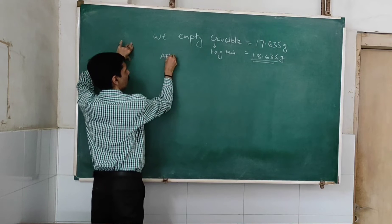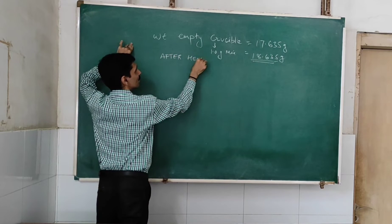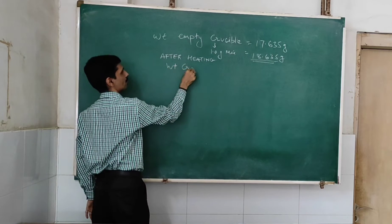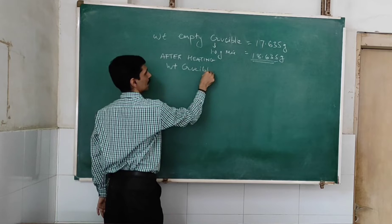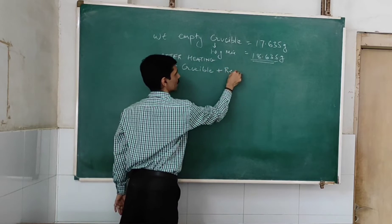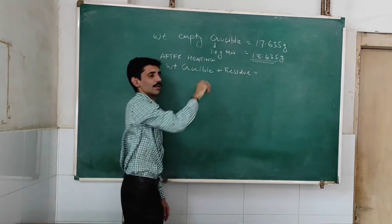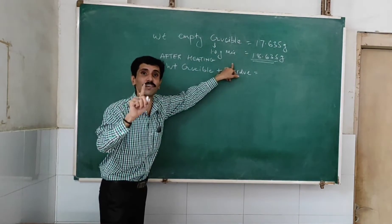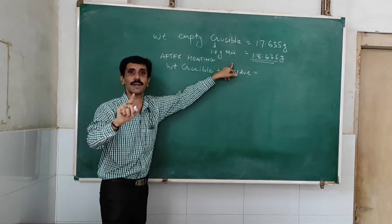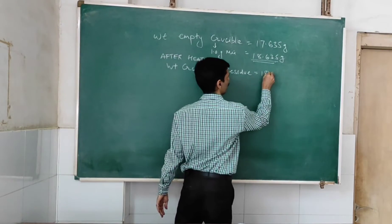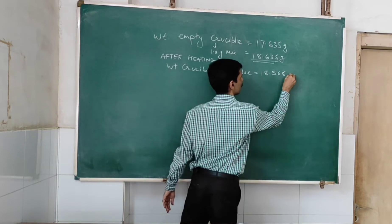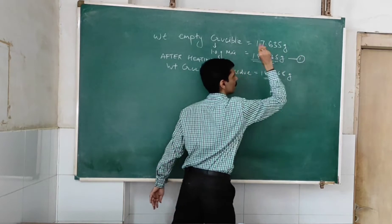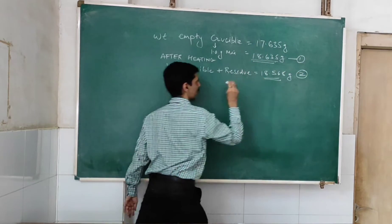Now, after heating, we have the weight of the crucible plus residue. I use that term residue. So that weight, that was the loss taking place. It was because of only and only carbon dioxide. Now that weight was 18.568 grams. So this is before heating. This is after heating.